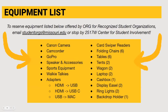ORG has a variety of equipment that recognized student organizations can check out for free. We just ask that you treat the equipment nicely and pay to replace anything that you damage. Some popular items include canopy tents, folding tables and chairs, Bluetooth speakers, and card swipe readers. You can reserve this equipment by emailing us or coming into our office in the Center for Student Involvement.